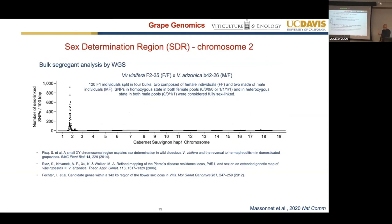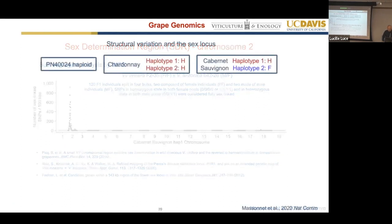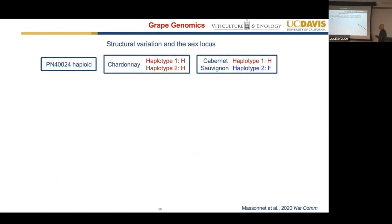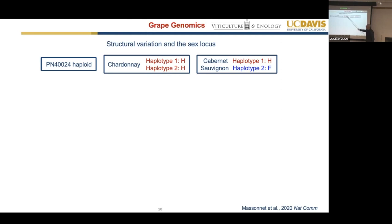Sex determination has been defined to a single locus on chromosome 2. When we published the Chardonnay genome in 2019, we had available the PN40024 genome — haploid, derived from Pinot Noir, which is heterozygous for hermaphroditism, carrying what we think is a hermaphroditic allele and a female allele. However, this is haploid, so only one allele is represented and we didn't yet know which. Chardonnay we knew genetically is homozygous hermaphrodite. Cabernet Sauvignon is heterozygous for hermaphrodite and female.